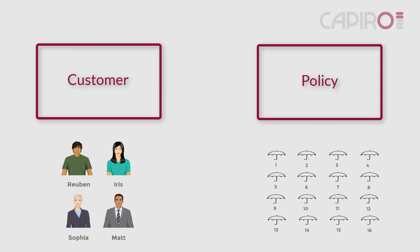This is good modeling practice. We call detail, such as the attributes, adornments. We show only the adornments that are needed at any particular time.